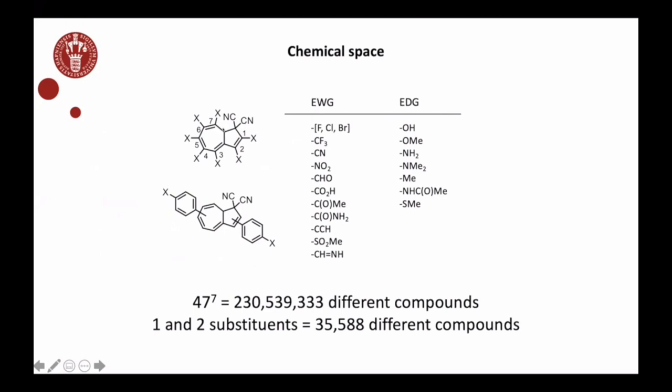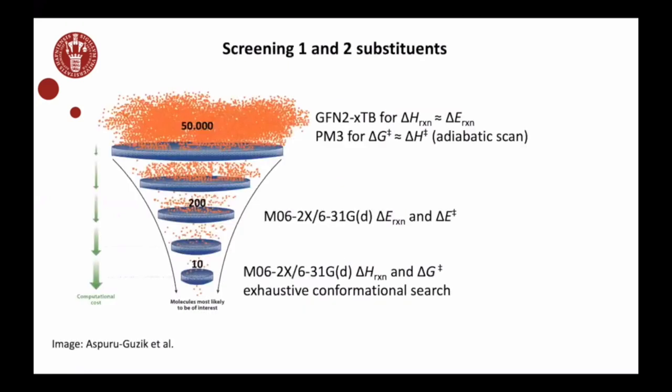Here we do what's called an adiabatic scan to estimate the barrier. We pick this bond here and constrain it to distances that are intermediate between the DHA and the VHF. The energy will initially go up and then down, and the highest energy structure is then the barrier. Out of these 50,000, we then pick the 200 most promising candidates.